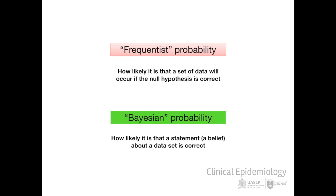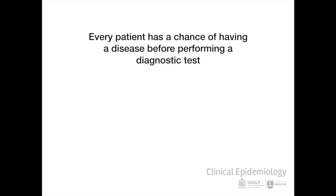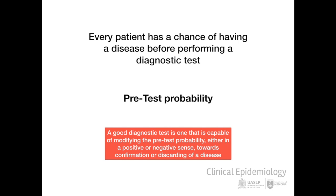Applied to the diagnosis of diseases, Bayesian statistics allow us to calculate the degree to which our belief that a patient has a certain condition, called a priori probability or pre-test probability, is modified after performing a diagnostic test, called the post-test probability. A good diagnostic test is one that can modify the pre-test probability, either in a positive or negative sense, towards the confirmation or discarding of a disease.